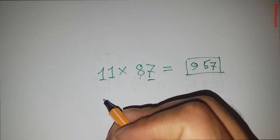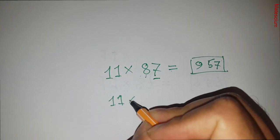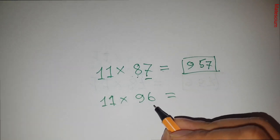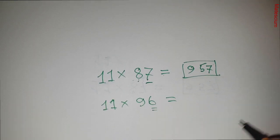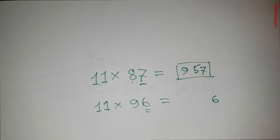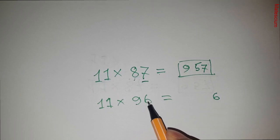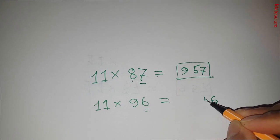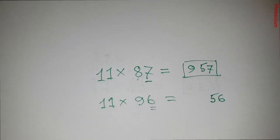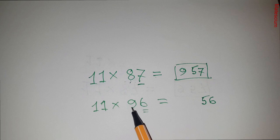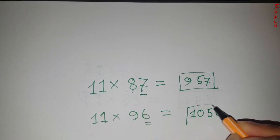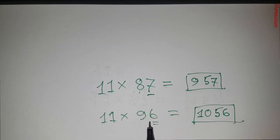Another example: 96 times 11. Write the last digit 6 at the end. Add the two digits: 9 plus 6 is 15 — write 5 and carry 1. Then 1 plus 9 is 10 — write 10 here. The answer of 96 times 11 is 1056.